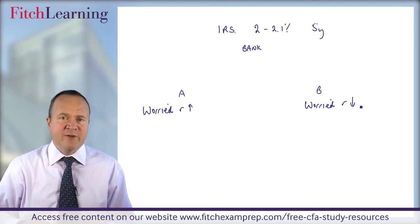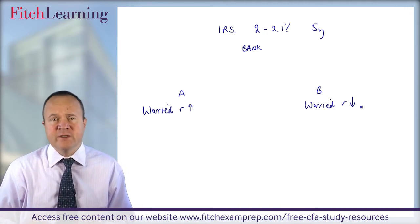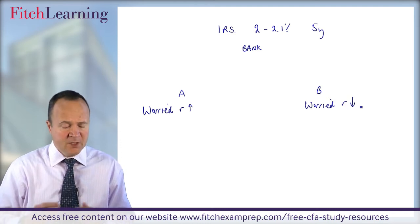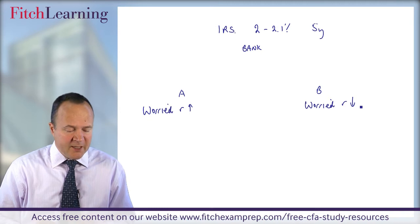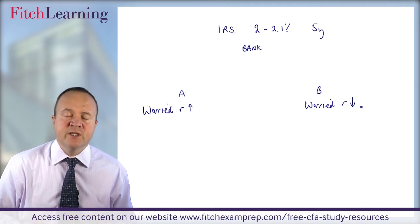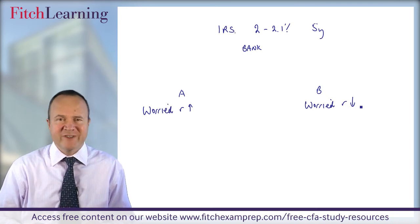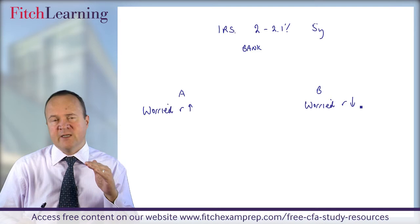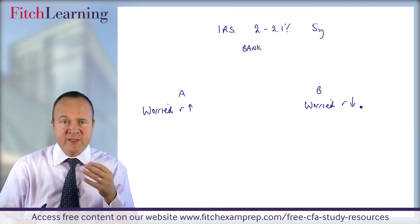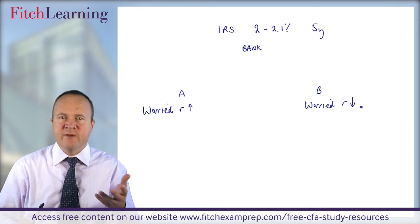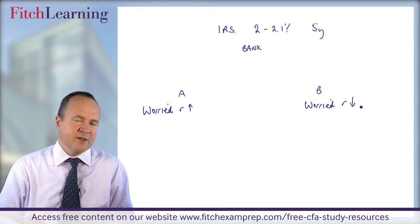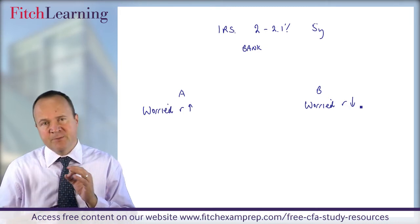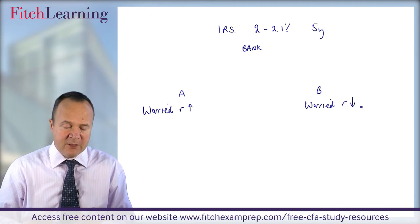Client B, who's worried about rates going down - the obvious one is an investor who's long cash, who has deposits on account and is worried about the interest rate on those deposits falling. So A is worried about rates going up. You have two choices with interest rate swaps: you can pay fixed or receive fixed. In CFA land, we only ever describe a swap based on what's happening to the fixed leg. So you'll never see a reference to a 'receive floating' or 'receive LIBOR' swap - that is not in the CFA vocabulary.